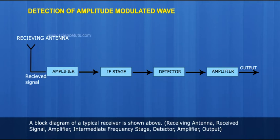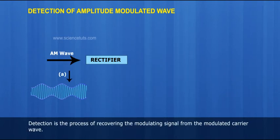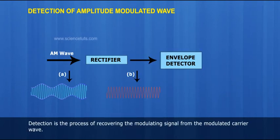Receiving antenna, received signal, amplifier, intermediate frequency stage, detector, amplifier, output. Detection is the process of recovering the modulating signal from the modulated carrier wave.